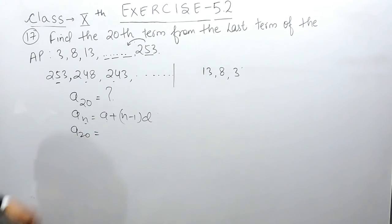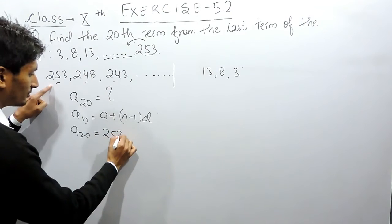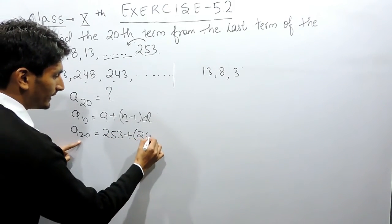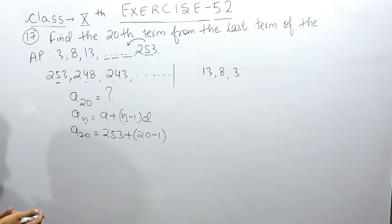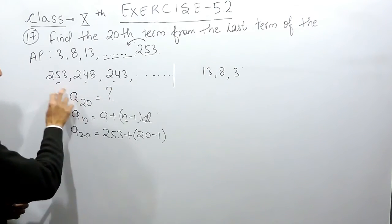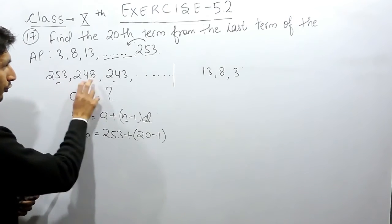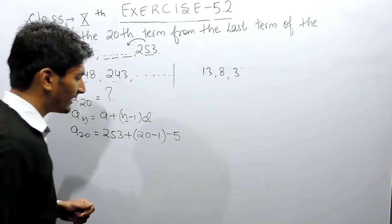The first term will act as 253, plus the term which you have to find is 20 minus 1. Here the common difference is minus 5 because the constant which you are adding here is minus 5, means you are subtracting 5 to form this AP. So the common difference will be minus 5.